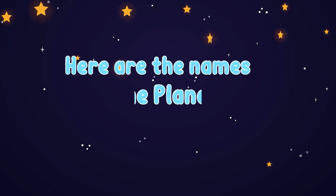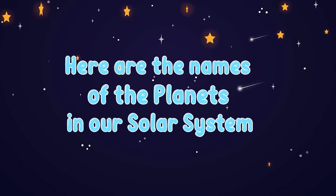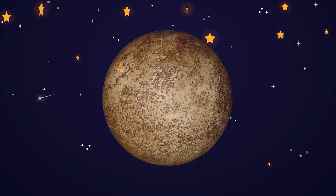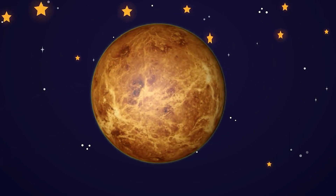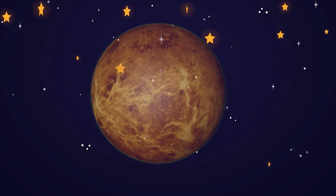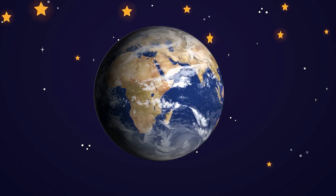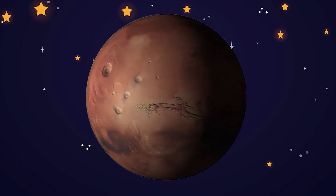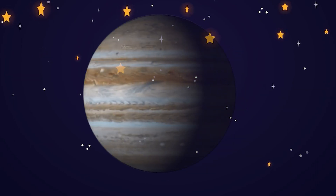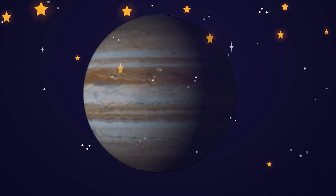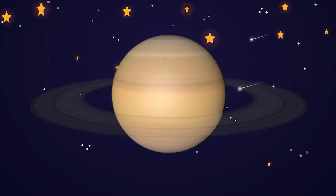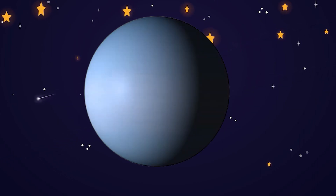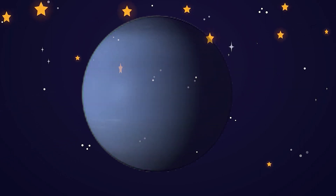Here are the names of the planets in our solar system. This is Mercury. This is Venus. This is Earth. This is Mars. This is Jupiter. This is Saturn. This is Uranus. This is Neptune.